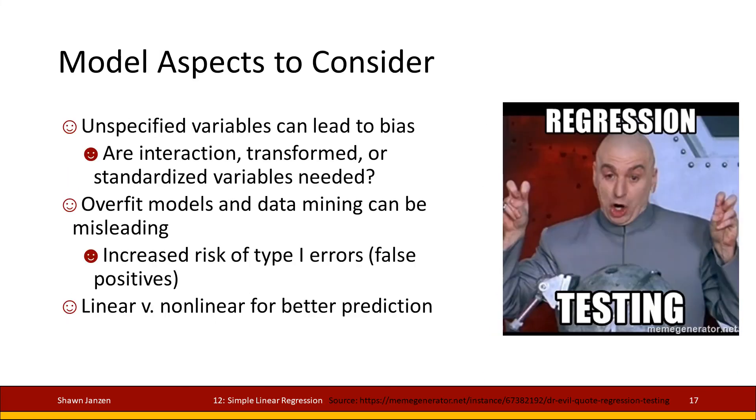When you're talking about model aspects and things to consider, we want to think about that having unspecified variables—things that we haven't taken into consideration—can lead to biasness. We also want to ask ourselves are we reshaping our variables in any way, are we transforming them, standardizing them, or otherwise doing things to them that could potentially change how the model is being fit. Again, if you're overfitting or data mining your models, this can lead to misleading results, which can increase the risk of your Type 1 error. You may come across some extra false positives.